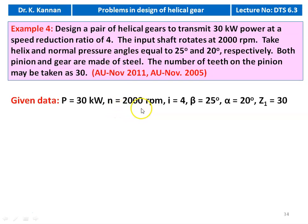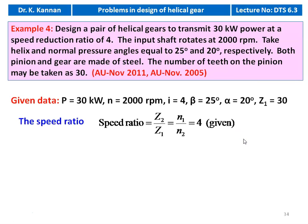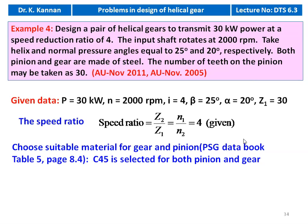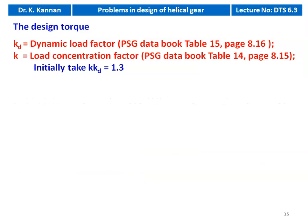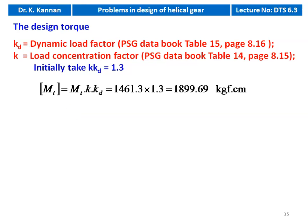Given data: power = 30 kW, pinion speed = 2000 RPM, speed reduction i = 4, helix angle β = 25°, pressure angle α = 20°, Z1 = 30, speed ratio = 4, material C45 steel. Torque: MT = 97420 × 30 / 2000 = 1461.3 kgf·cm. Initially assume KKD = 1.3, so design torque = 1461.3 × 1.3 = 1899.69 kgf·cm.